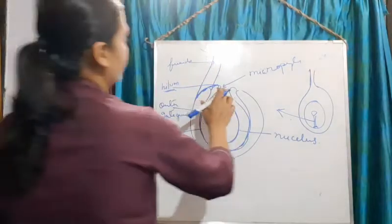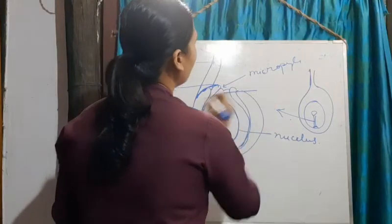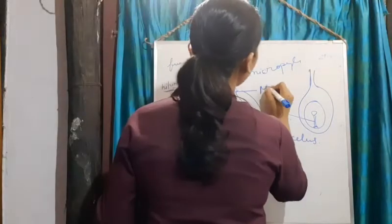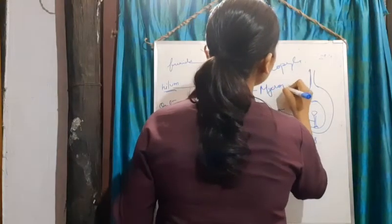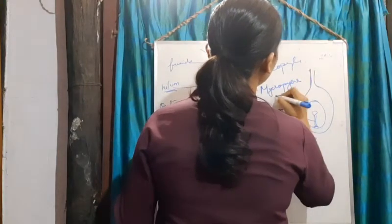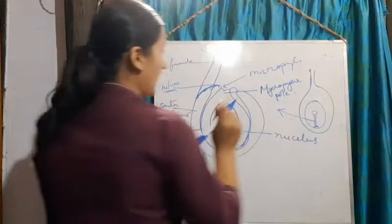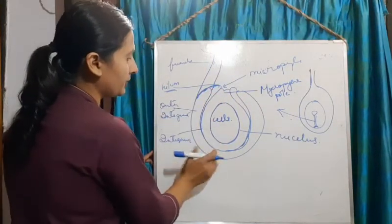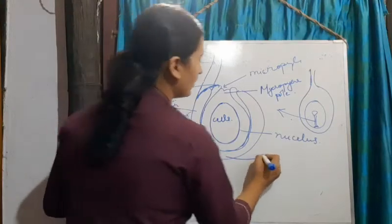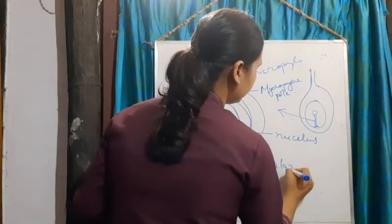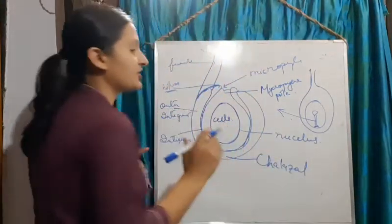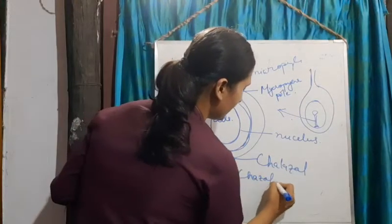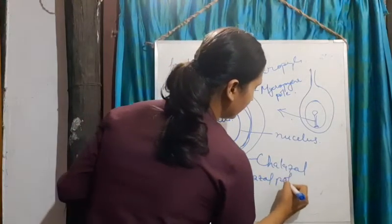This end is called your micropylar end or micropylar pole. Opposite to the micropyle is called the chalazal end — also called the chalazal pole. So remember: the end where the micropyle is located is the micropylar pole, and directly opposite to it is the chalazal pole.